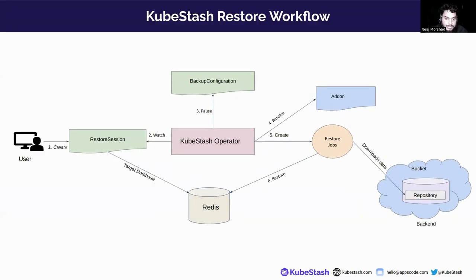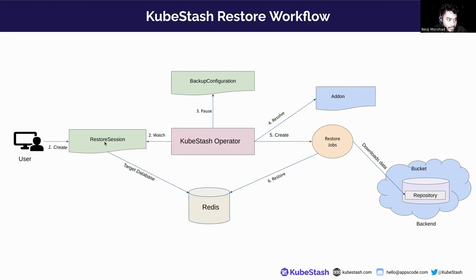To restore a Redis instance using KubeStash, the user has to create a RestoreSession object first, which contains information about the target database where the data will be restored and the data source information — including the snapshot and repository information. When a RestoreSession object is created, the KubeStash operator will pause any BackupConfiguration configured for the target database.